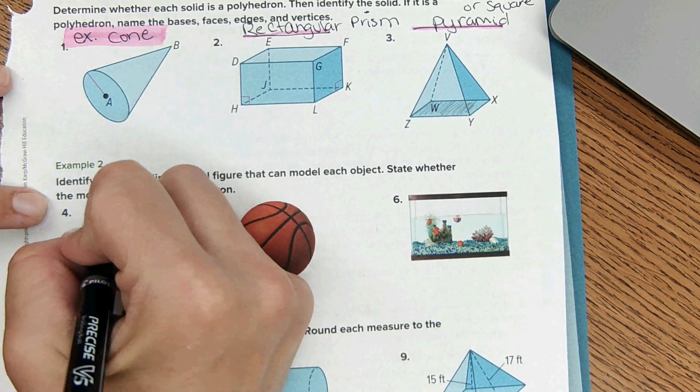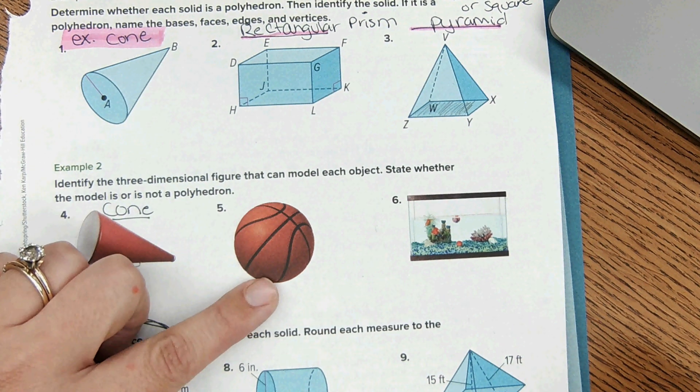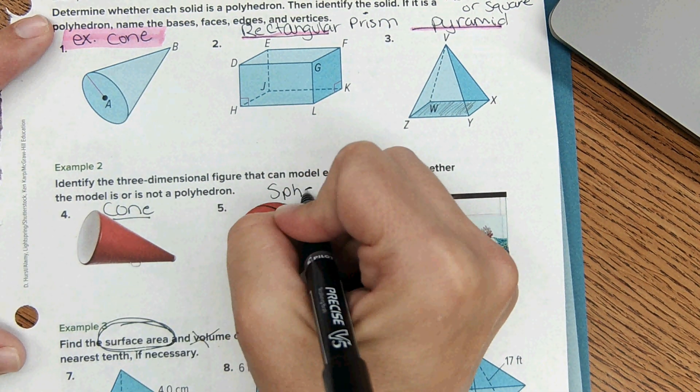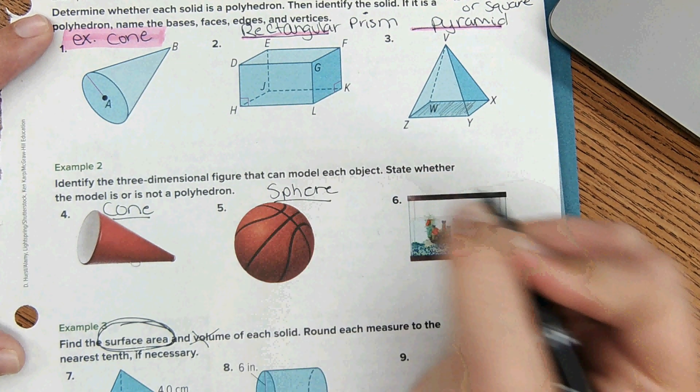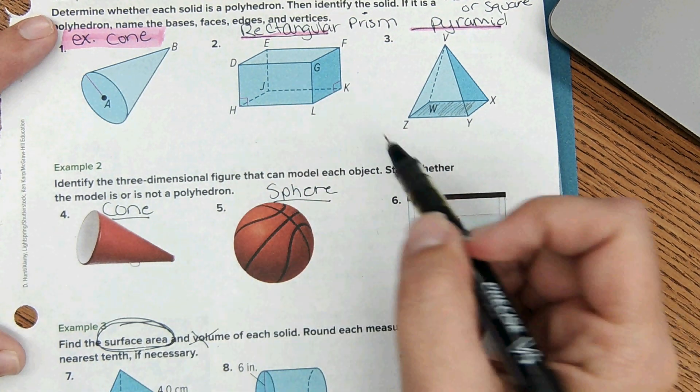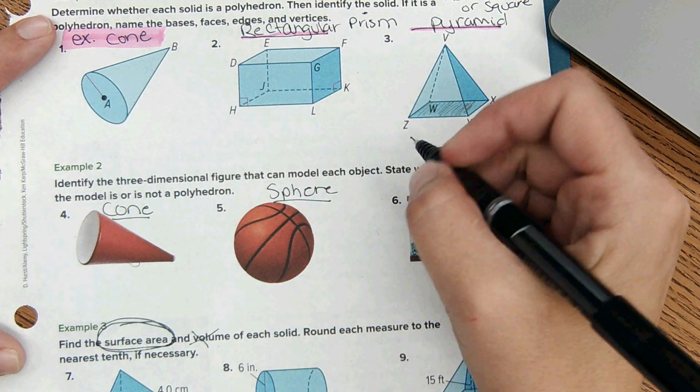Then for number four, it's a cone again. Number five would be a sphere.